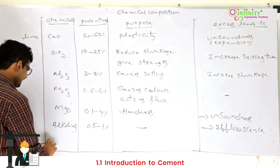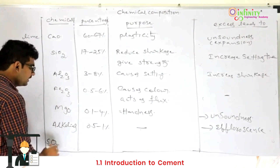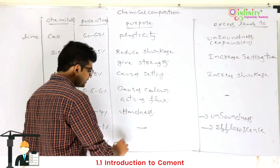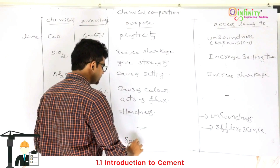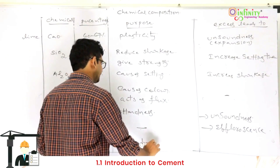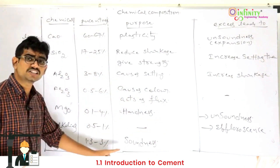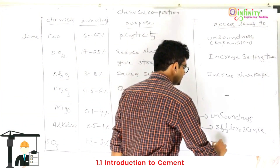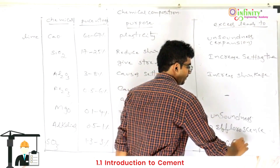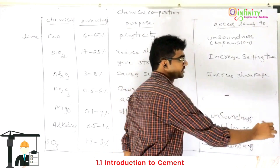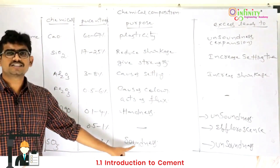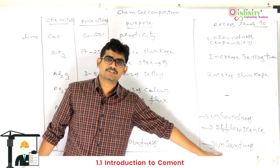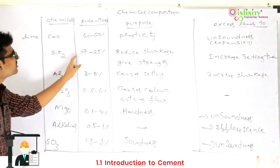The last chemical is sulfur trioxide (SO₃), at 1.3 to 3 percent. Its purpose is it causes soundness to the cement. However, if sulfur trioxide is excess, it will cause unsoundness to the cement. So in normal quantity it causes soundness, but in excess it causes unsoundness. These are the 7 chemicals involved in cement — their percentage, their purpose, and what happens if the content is excess.